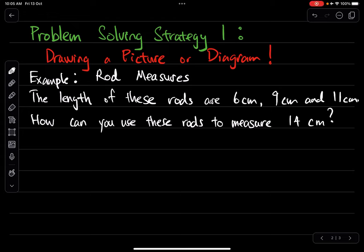This is the second example for problem-solving strategy number one: drawing a picture or diagram. This example is on rod measures. The length of these rods are 6cm, 9cm, and 11cm. How can you use these rods to measure 14cm?